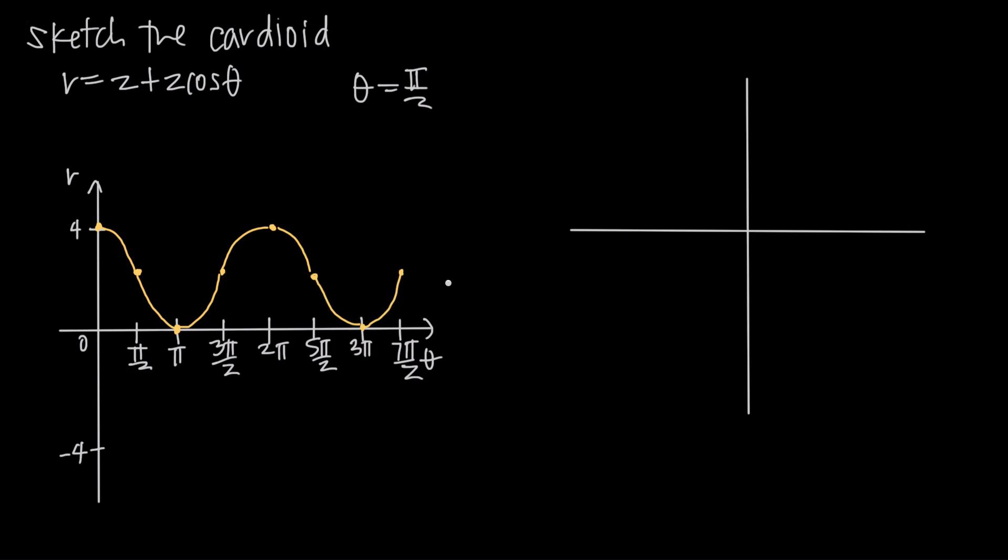So now once we've got this smooth curve sketched out on these axes, we want to translate it to polar coordinate axes. So we'll call this the angle 0, the angle pi over 2. This is the angle pi. This is the angle 3 pi over 2.